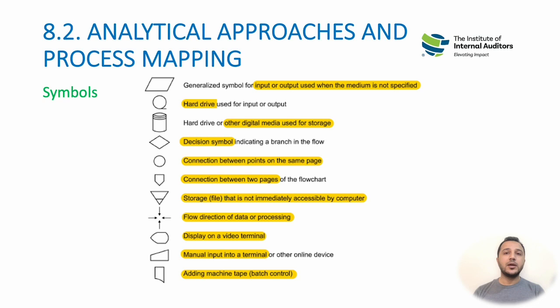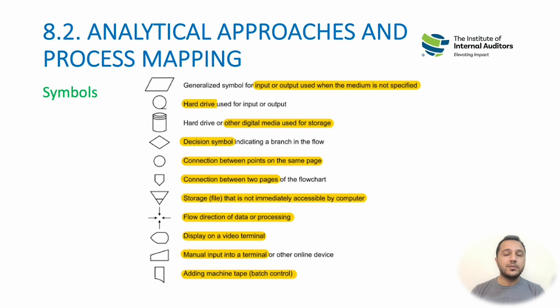A connector with a downward arrow connects a process across two pages — when the process continues to the next page. There can be slight differences between certain symbols, but once you're in practice you'll know exactly where to use them. For the exam, you just need to be familiar with what these symbols are and their purpose — for example, an MCQ might show you a shape and ask what it symbolizes.